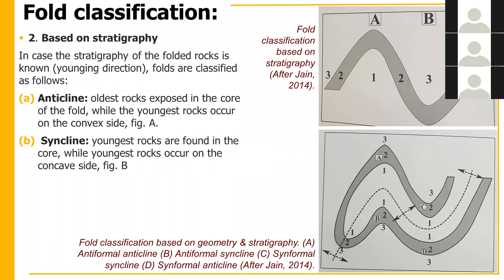Figure C is a proper syncline with bed number 3 in the core — youngest in the core again — so this is syn-formal syncline. Figure D has a synform shape, but bed number 1 (oldest) is in the core, so this becomes syn-formal anticline. So this classification based on stratigraphy gives us anticline and syncline, but in complex situations we use anti-formal anticline, anti-formal syncline, syn-formal syncline, and syn-formal anticline.